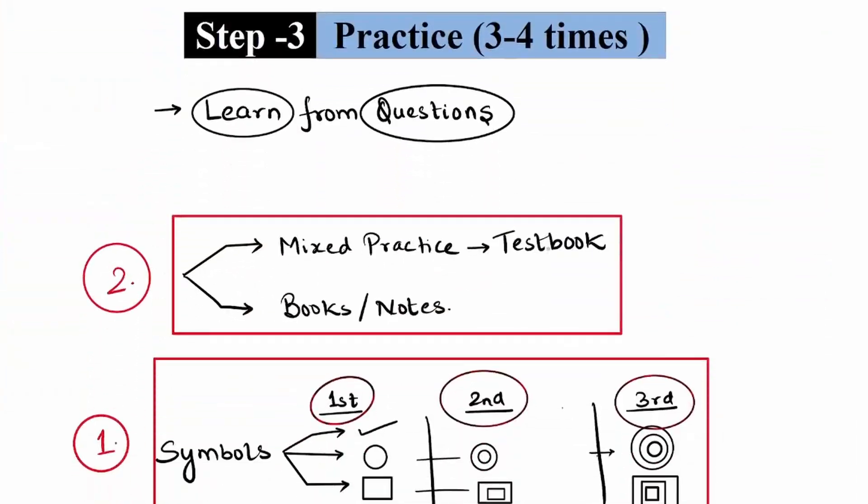So step three of our strategy is practicing multiple times. Now what happens if you practice multiple times? You learn from questions. Not every theory, not every concept needs to be learned from the classes that you are watching. You need to learn from the questions. You need to have a feedback mechanism. So if you are practicing multiple times, you will definitely learn concepts of mathematics and you will not have any problem. So while practicing, there are two things. First thing is you have to use these kinds of symbols.